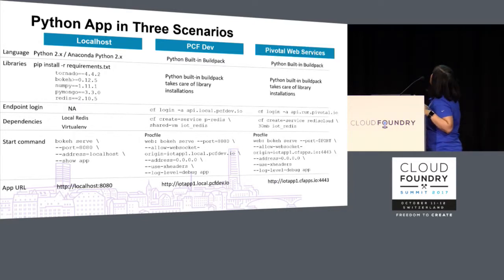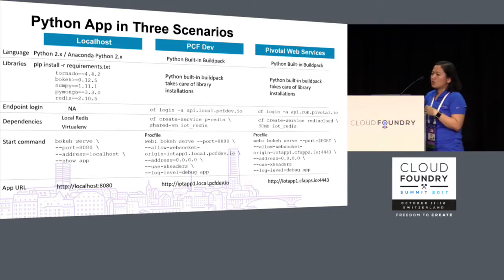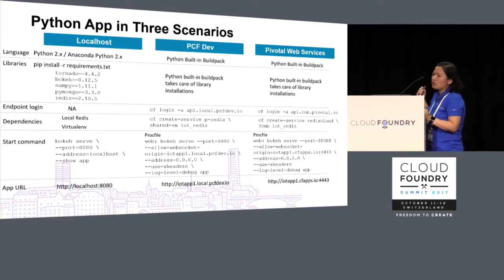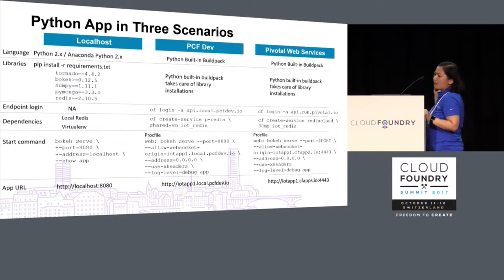The third scenario is Pivotal Web Services. The major difference is the port — I use port 4443. That's because Pivotal Web Services changed the default websocket port to 4443. So if you don't explicitly list 4443, then your app won't basically work — it won't update data, et cetera. Another difference is that for Pivotal Web Services, it uses Redis cloud as the plan name for Redis. So you have to change from P Redis to Redis cloud, and you also have to provide a plan detail — in this case I just go with the free tier, 30 megabytes. And because I listed the websocket to 4443, you also have to access the app at 4443 as well.